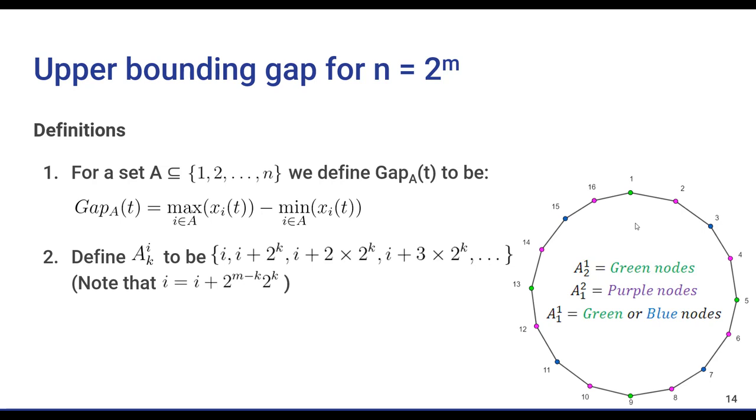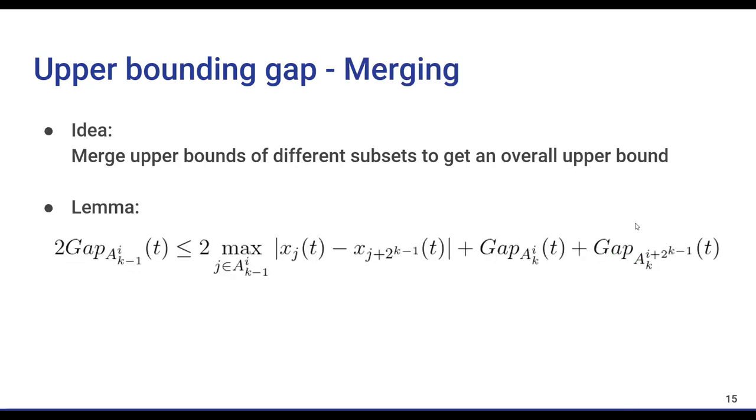And the question is that if we know the gap for A(2,1), which are the green nodes, and A(2,3), which are the blue nodes, can we somehow combine these two and upper bound the gap for all of the green and blue nodes together? This is the main idea which we will refer to as merging subsets.